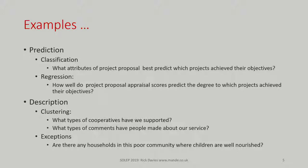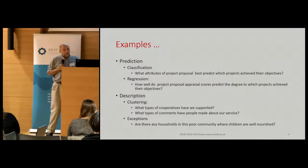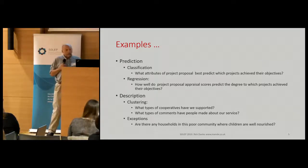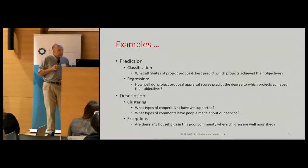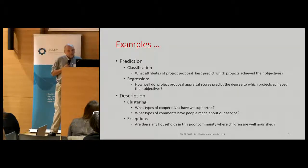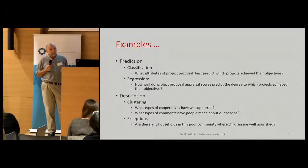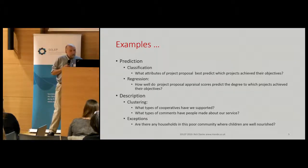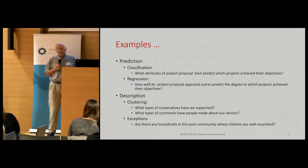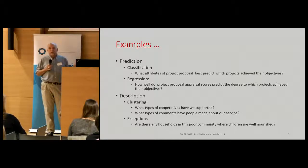Some examples of classification type prediction would be: what attributes of a project proposal might best predict whether the project will subsequently achieve its objectives? Whereas a regression — working with numerical data — would be phrased more along the lines of: how well do project proposal appraisal scores predict the degree to which projects achieve their objectives? On the clustering side, we might ask what type of cooperatives have we supported — I'm doing some work with Oxfam analyzing a dataset on cooperatives they've been supporting, including looking for positive deviance cases where a cooperative has done well despite circumstances suggesting it shouldn't.